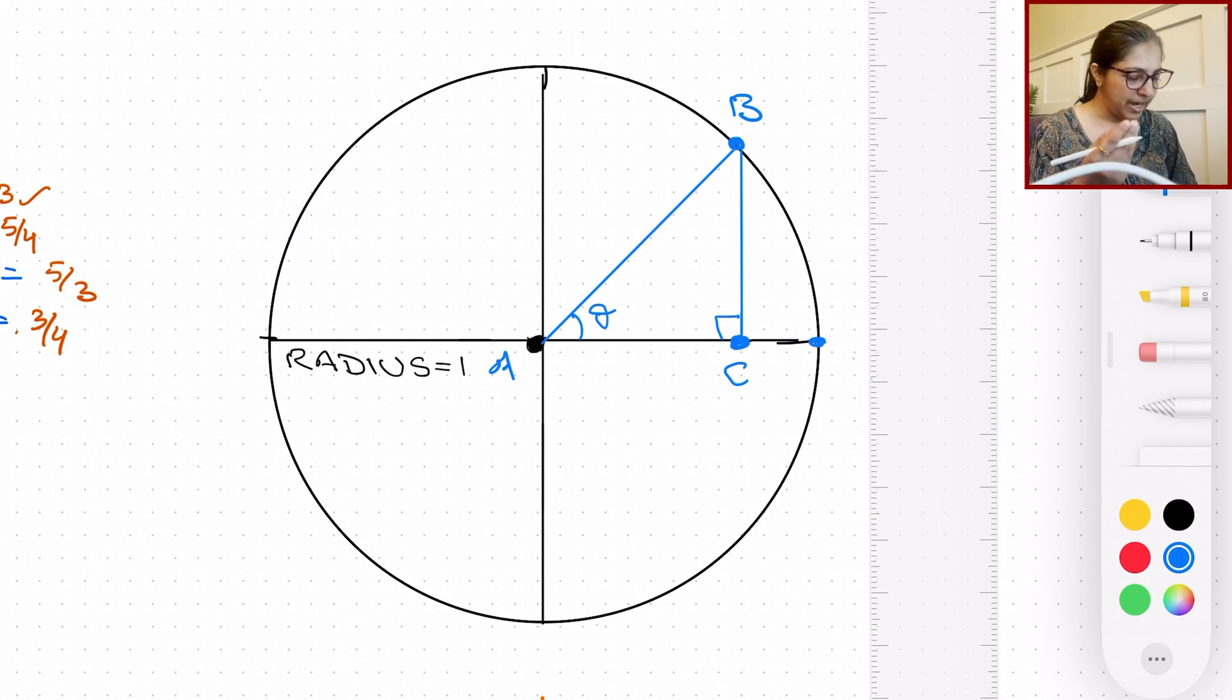Now, again, I will refer to one of my videos where side length AB, which is the hypotenuse, is a radius of this unit circle. The unit circle has a radius of one unit, so that makes AB one unit. That means the hypotenuse is one.